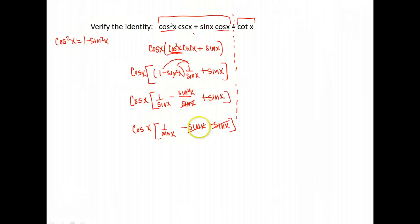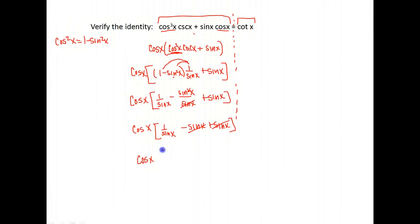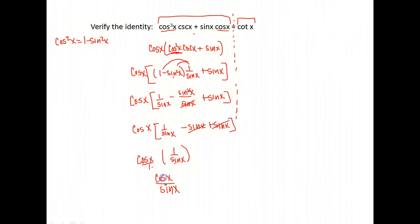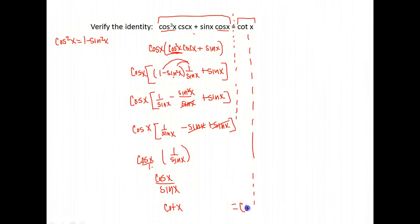That's making progress, because notice I have a minus sine x and a plus sine x, which would be 0. Sometimes your method won't work — you won't end up with cotangent x — and you'll have to go back, check for errors, or form a new game plan. But keep working with it. Now I'm left with cosine x times 1 over sine x. Multiplying those: top times top gives me cosine x, bottom times bottom gives me sine x. And cosine x over sine x is equivalent to cotangent x. I have now verified the identity.